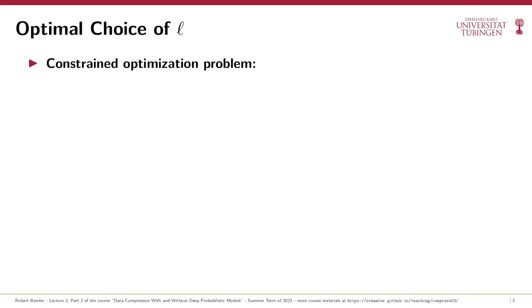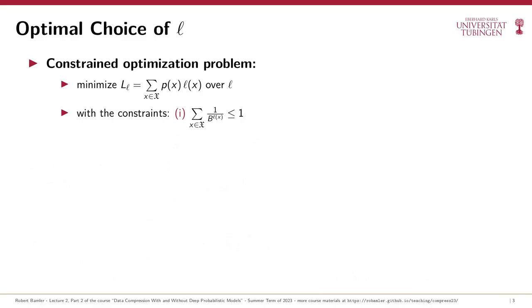Let's formalize our goal as a constrained optimization problem. We want to minimize the expected codeword length over the function l that specifies a codeword length for each symbol, subject to the Kraft inequality and the constraint that lengths must be positive integers. The integer constraint is more difficult to deal with because discrete optimizations typically lack gradients, so let's relax it for the time being — we'll reintroduce it on the next slide.